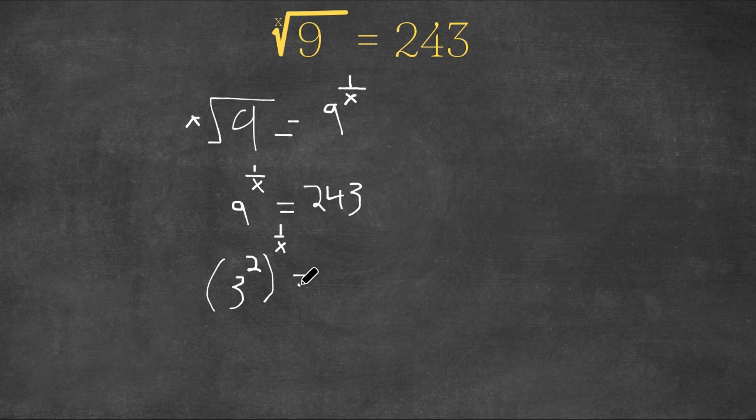And this equals, well, what's an alternate form of writing 243? Well, 243 is also 3 to the power of 5.